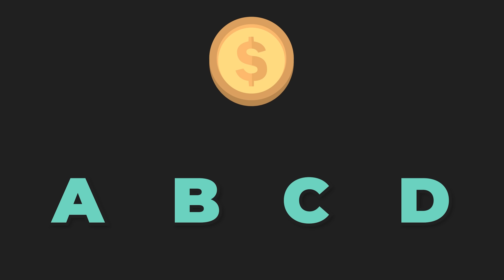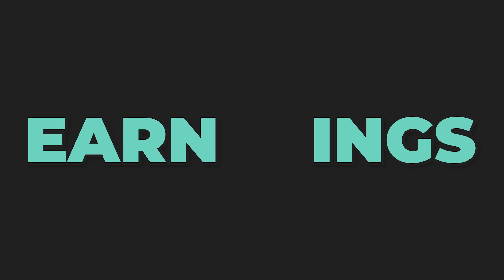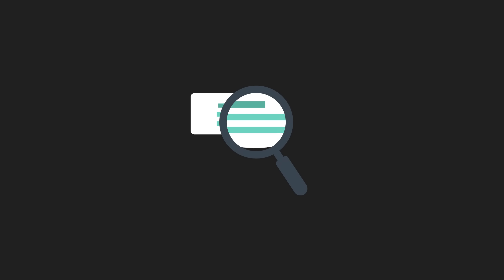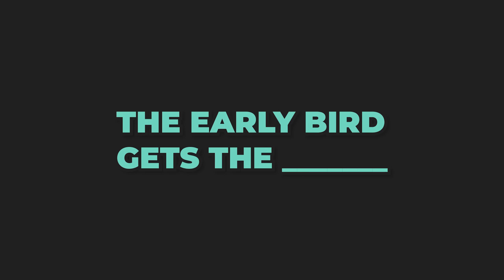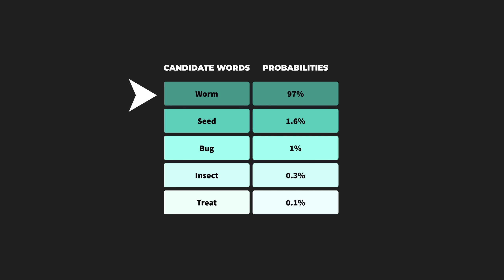Words and tokens get used interchangeably, but there's actually a difference. Each token is about four characters, meaning some words like 'earnings' will be split up into separate tokens. When GPT-3 generates text, it's essentially guessing the next token over and over until it has completed the text you asked for. The next token is chosen by randomly sampling from a list of probabilities. The better the token fits into the sentence based on the training knowledge GPT has been provided with, the higher its probability of being chosen as that next token.